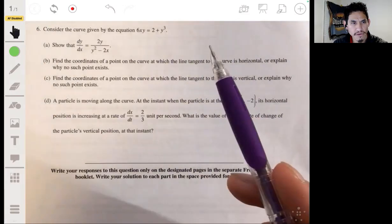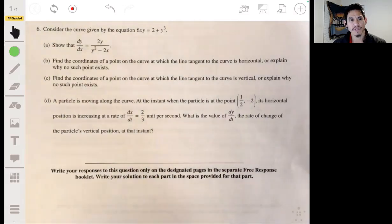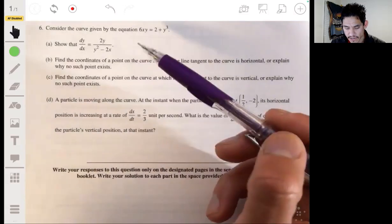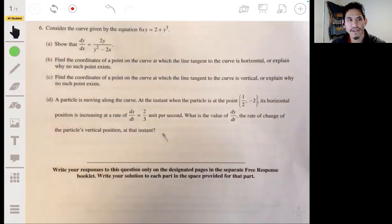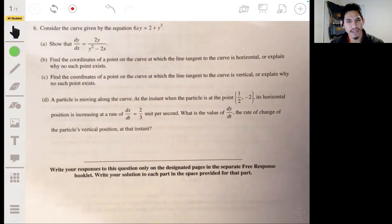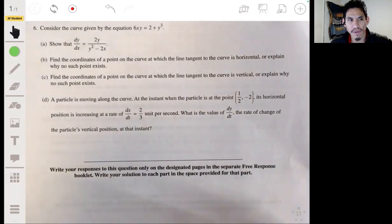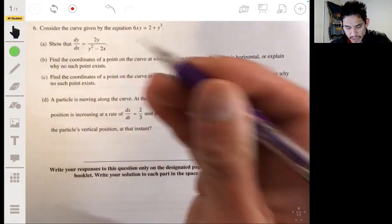All right, so problem six of the free response section of the Calculus AP exam for the 2023 year. Again, there are no official solutions out yet. They won't be out until like June or July. So these are going to be my solutions, which I'm really confident that I got correct. Just keep that in mind in case maybe you see something weird or you have a question. Maybe I made a little mistake, but I'm pretty sure I got this down. Anyways, here we go.